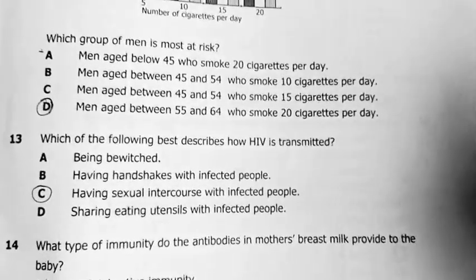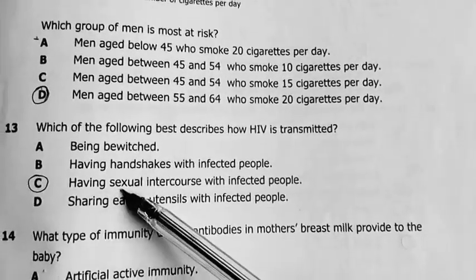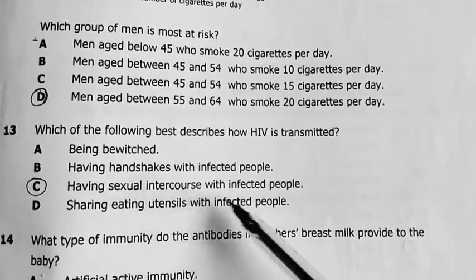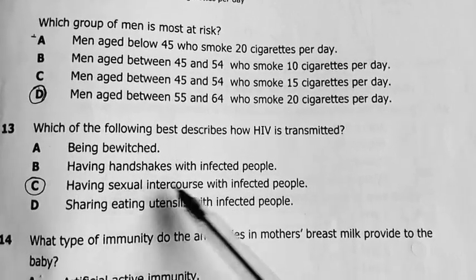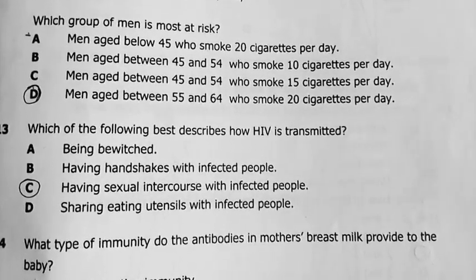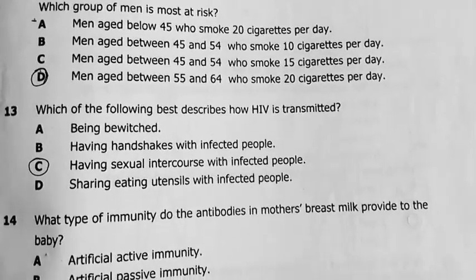Number 13. Which of the following best describes how HIV is transmitted? My answer, best answer here was having or doing bad things with an infected person. Having sexual intercourse with an infected person, especially unprotected bad things.